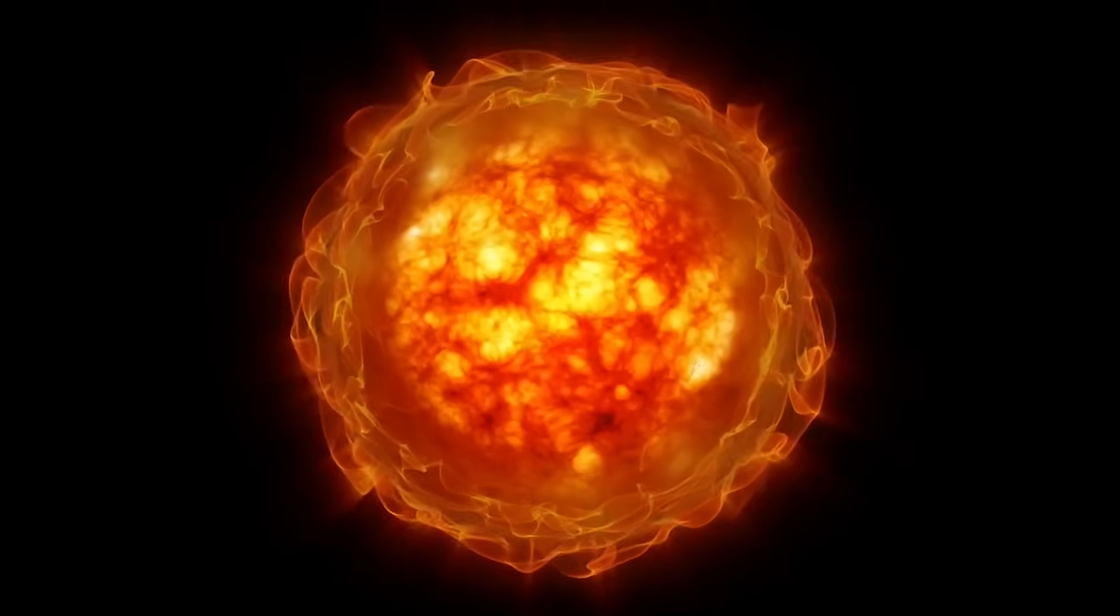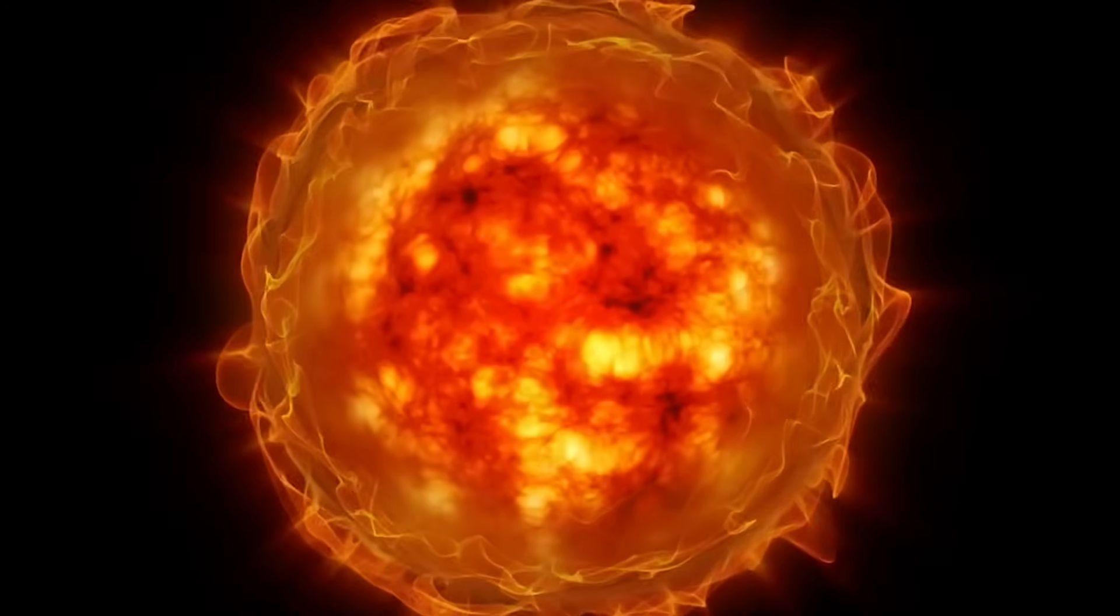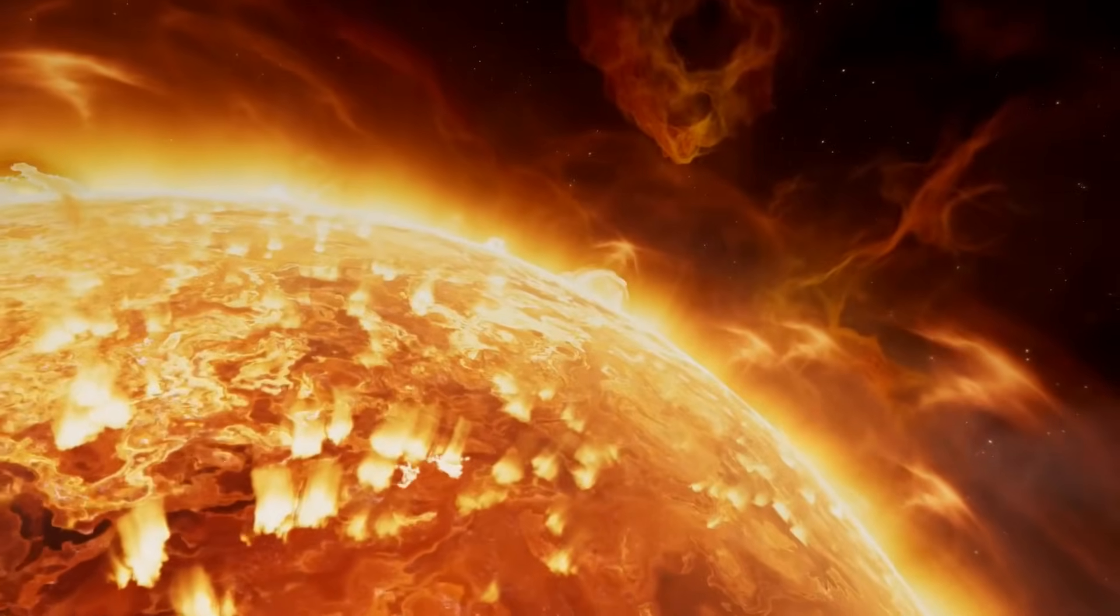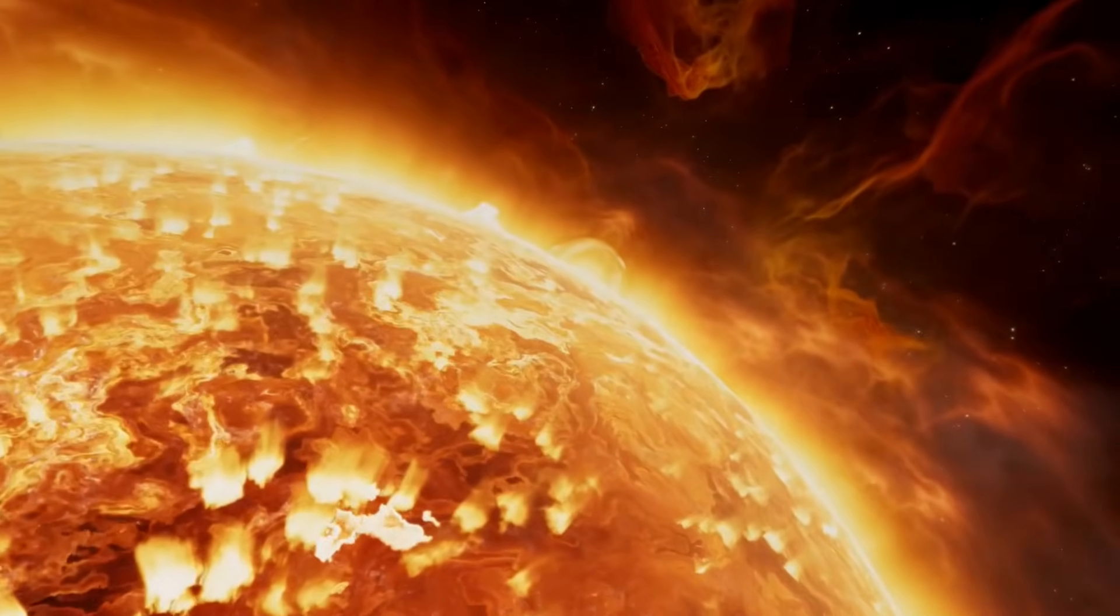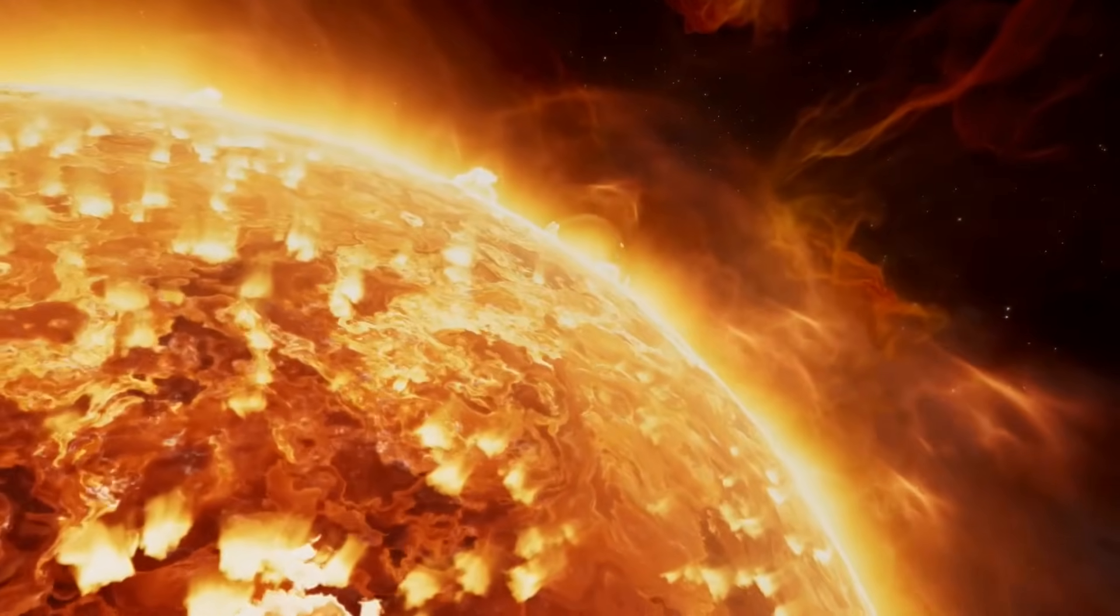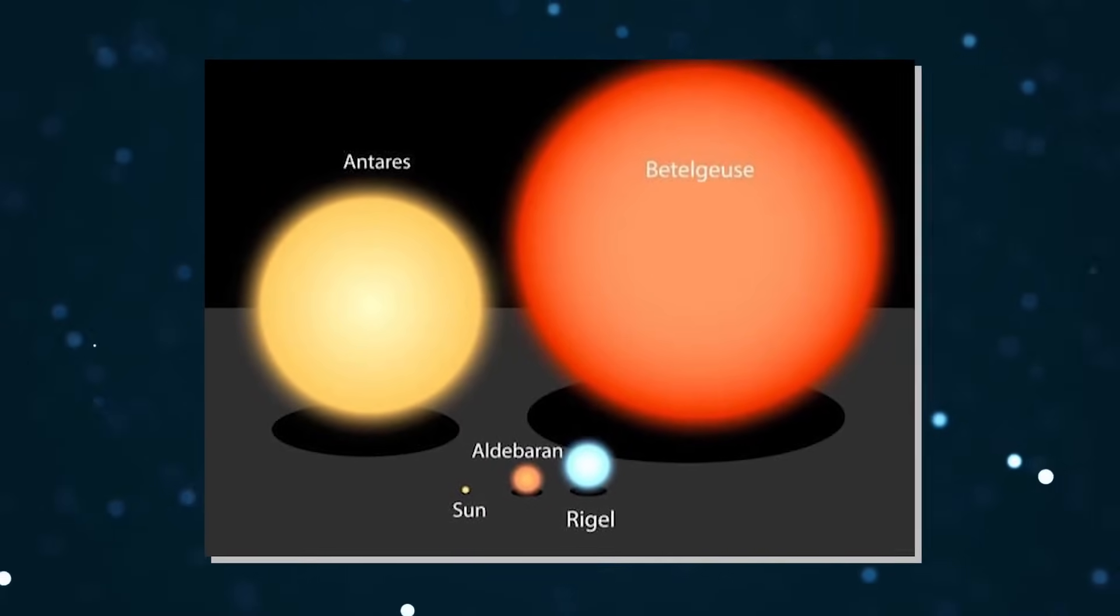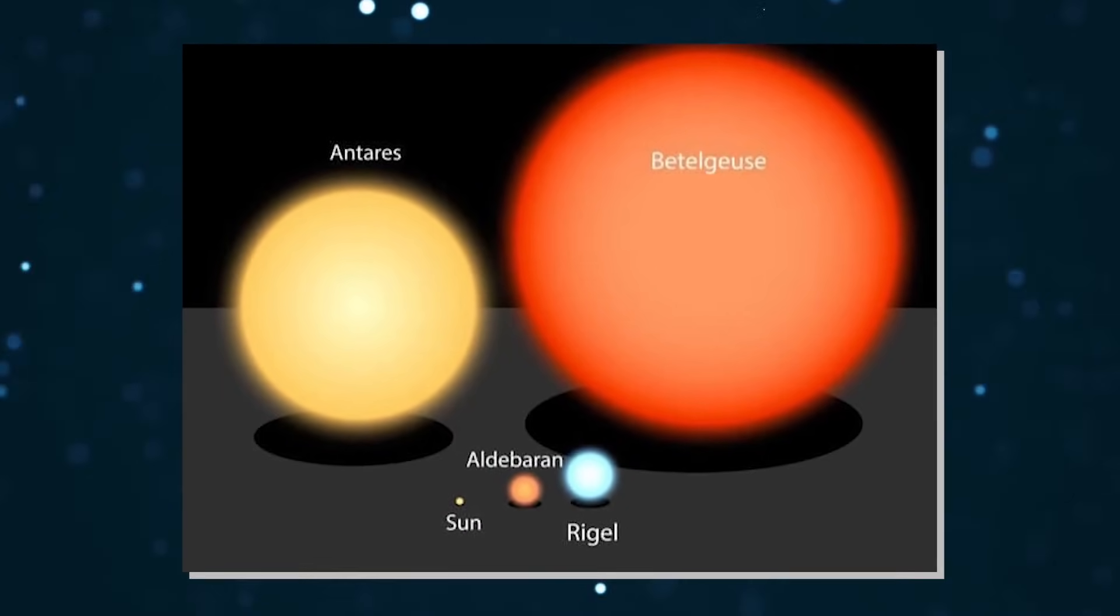Right now, Betelgeuse is absolutely enormous, irregularly shaped, and with an uneven surface temperature. It's more than 2000 degrees cooler than our Sun, but also much larger, at approximately 900 times our Sun's radius, and occupying some 700,000 times our Sun's volume.